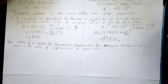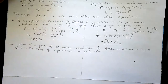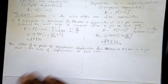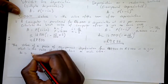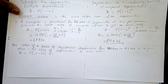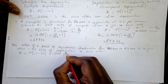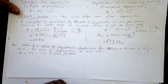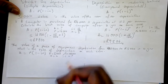Next question: the value of a piece of equipment depreciates from 10,000 to 5,000 in four years. What is the rate of depreciation in each case? We have straight-line and compound depreciation. For straight-line: A = P(1 - in). We are given A = 5,000, P = 10,000, n = 4, and i is what we're looking for.